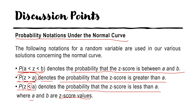So there are three things to consider: if your Z falls in between A and B (where A and B are Z-score values), if your Z is greater than A, and if your Z is less than A. That's how we deal with probability notations under the normal curve.